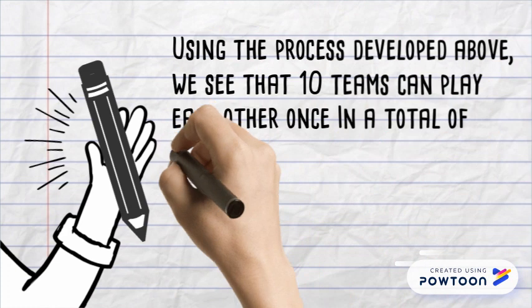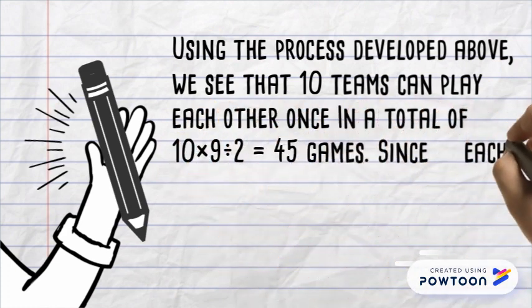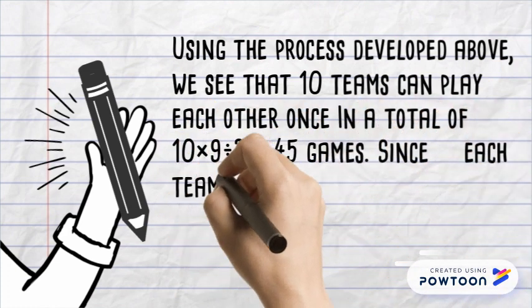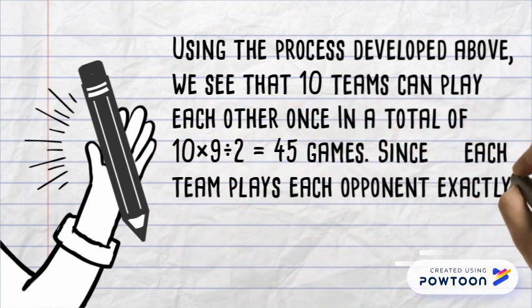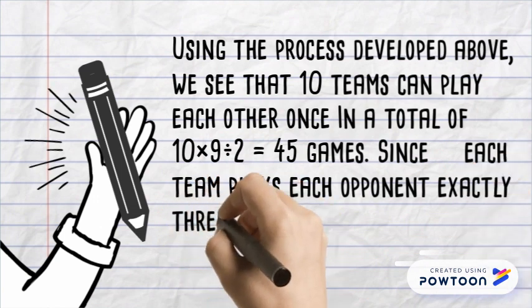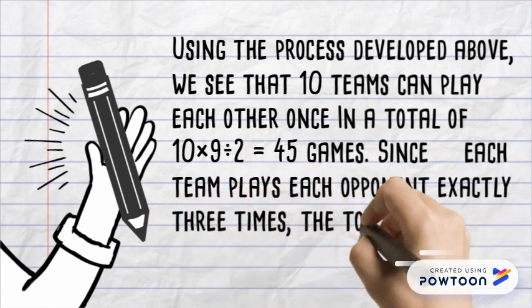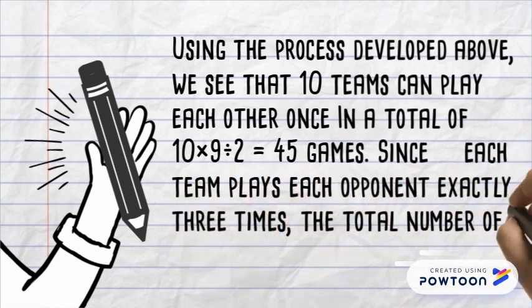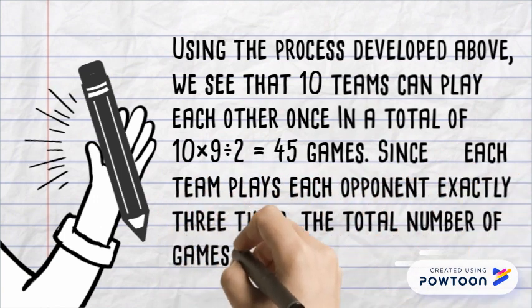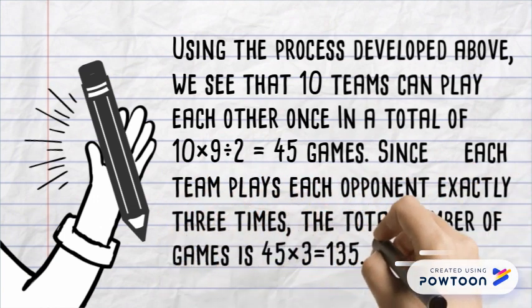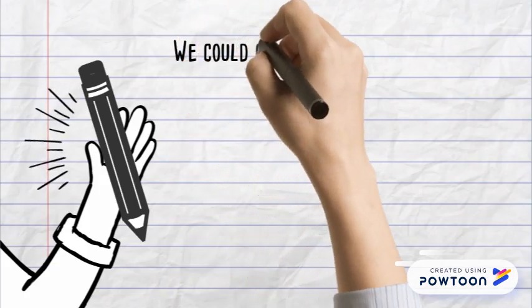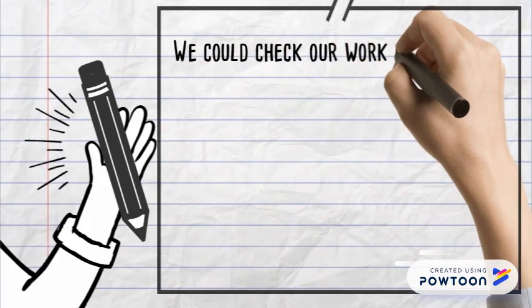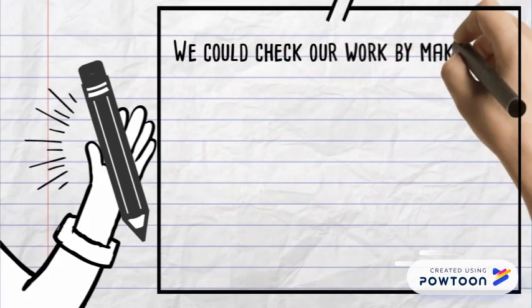Ten times nine divided by two equals 45 games. Since each team plays each opponent exactly three times, the total number of games is 45 times three equals 135. We could check our work by making a diagram that includes all ten teams represented by dots labeled A, B, C, D, E, F, G, H, I, and J.